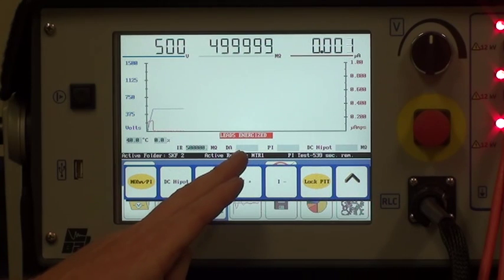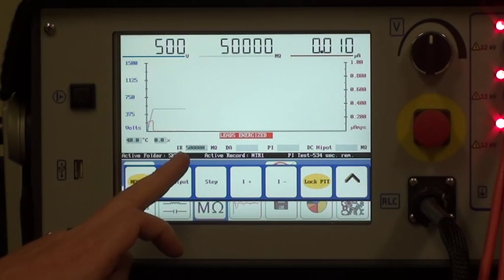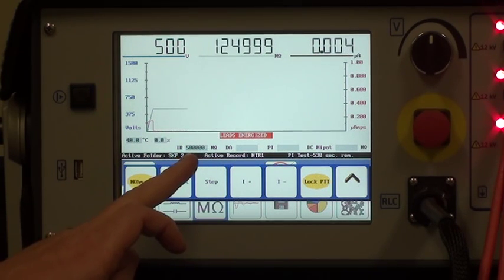Once the value has been determined, these windows here will be populated. Here you can see the value is indicated in the IR megaohm value window here.